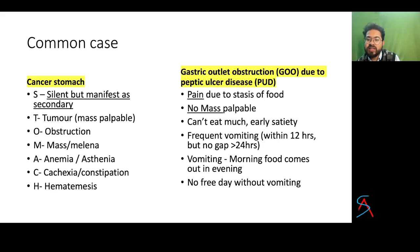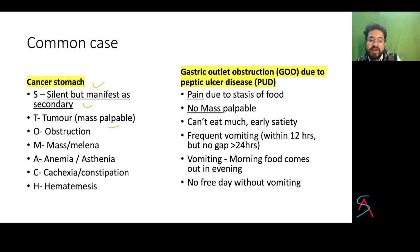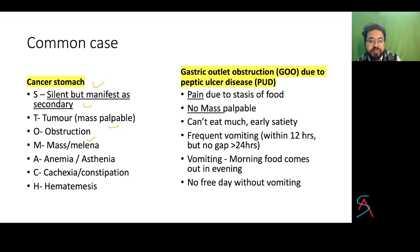For stomach cancer, you can use a mnemonic: most of the time they will be silent, meaning they will not have much of a problem and will only present in the late stage or when metastasis has happened. When they do present, there will be obstruction of the GI tract which causes pain, and they may have a mass.